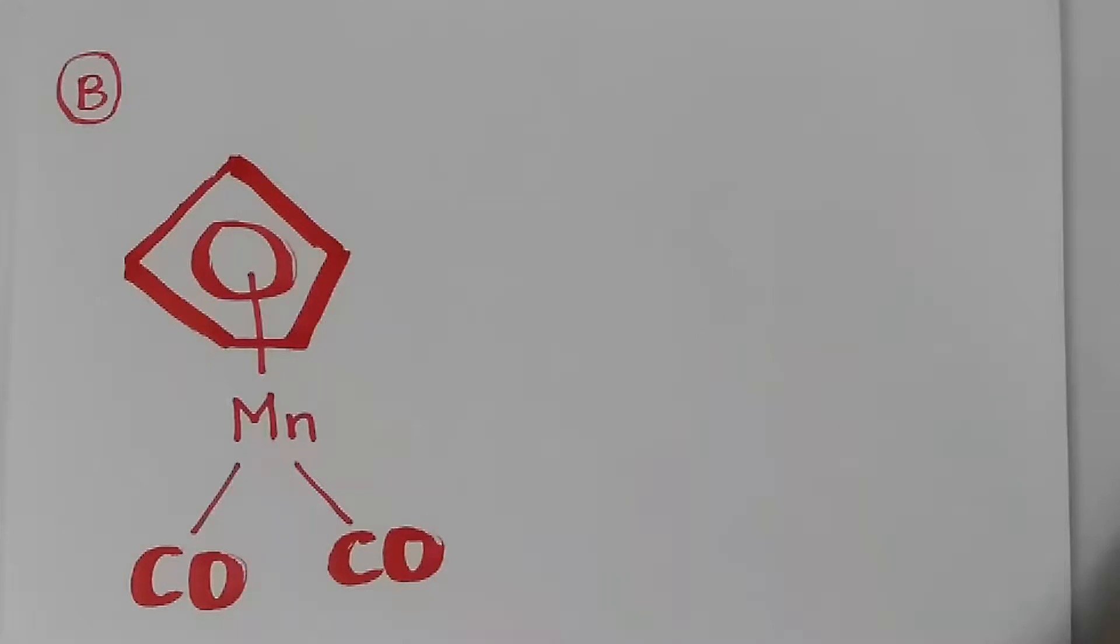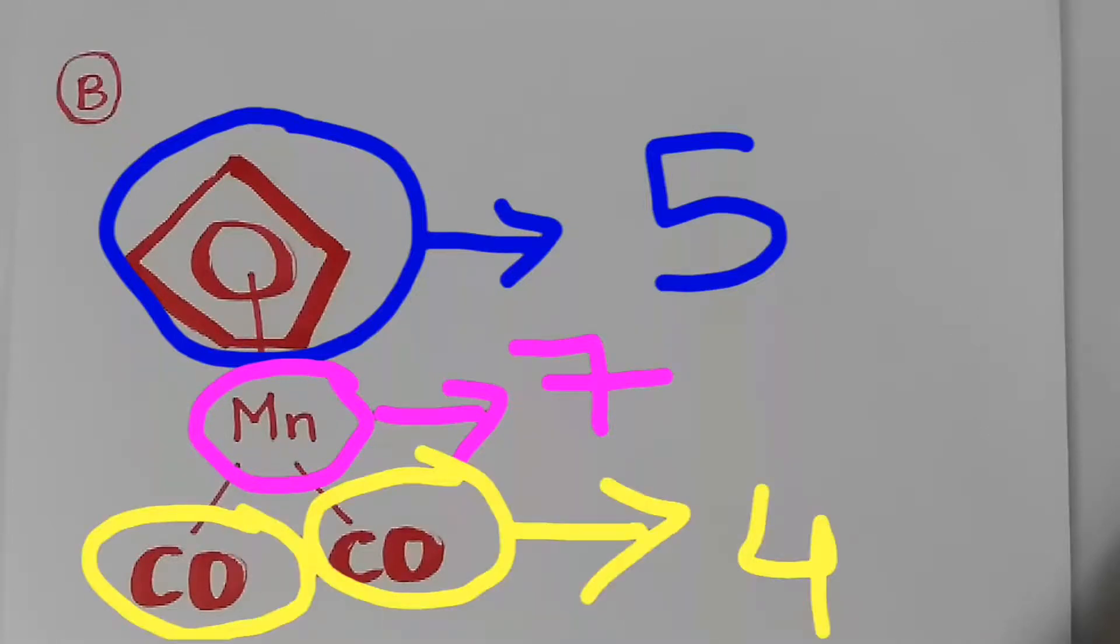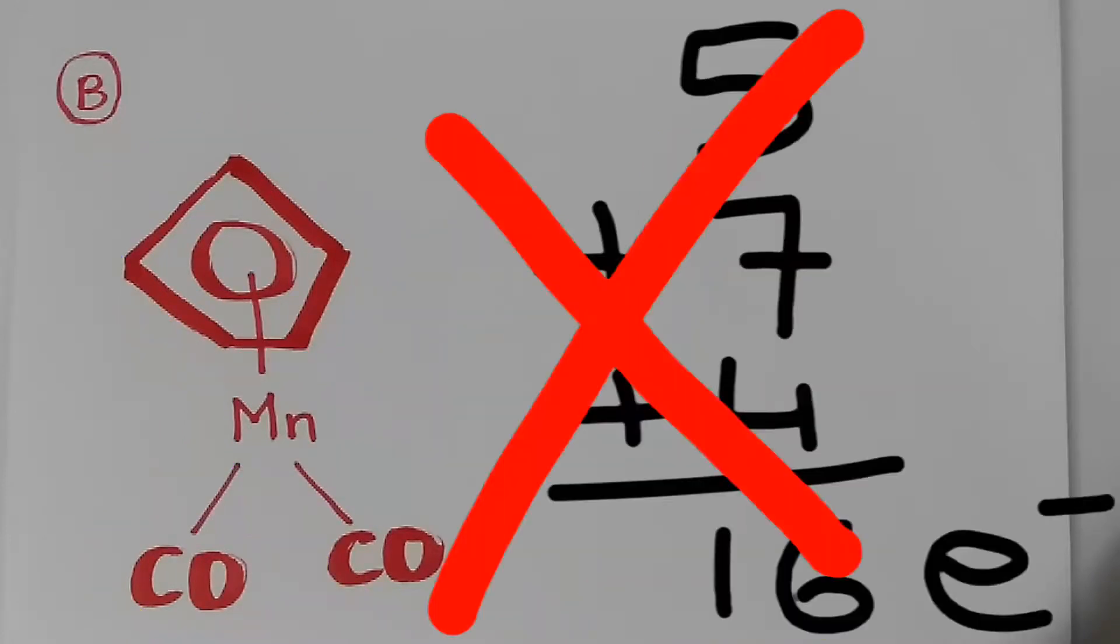In the compound B, this cyclopentadienyl ring will donate 5 electrons. Manganese will donate 7 electrons. These 2 carbonyls will donate 4 electrons. The total electron count is 16.